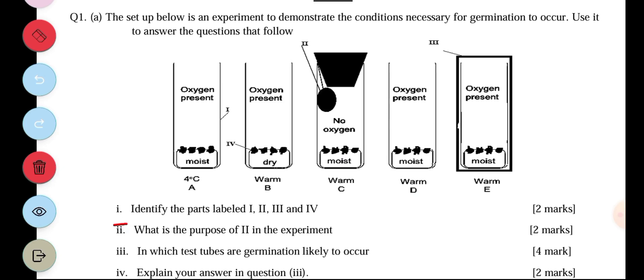So we have I - so I is a test tube. II is pyrogallic, P-Y-R-O-G-A-L-L-I-C. Then III is a cork. IV is a seed.